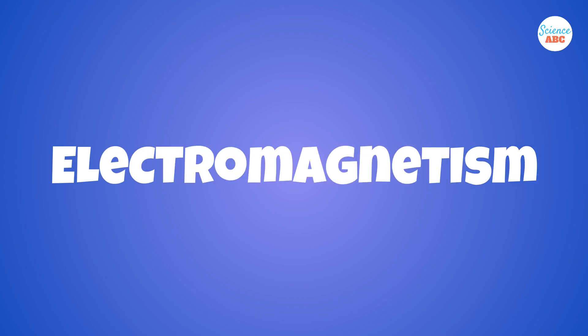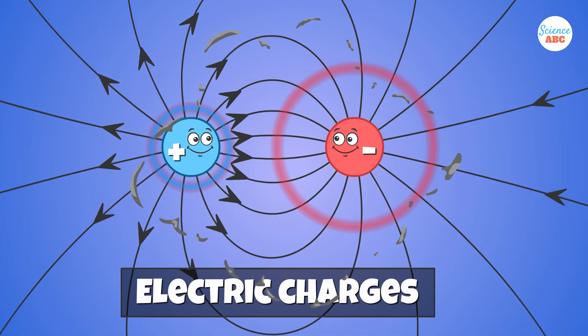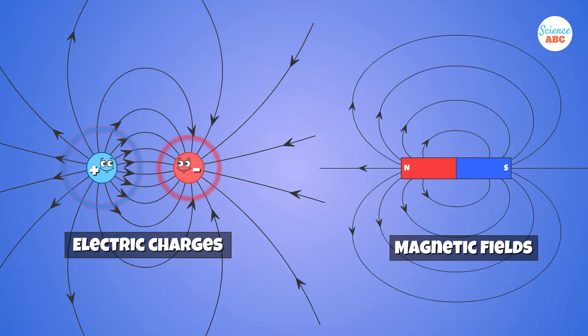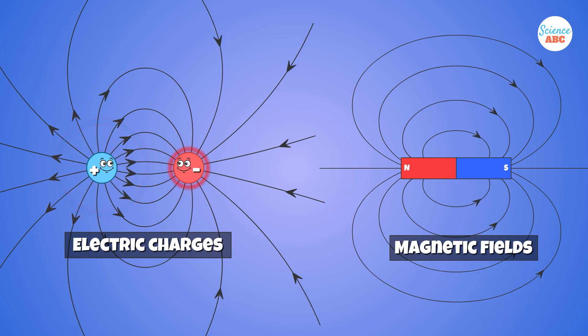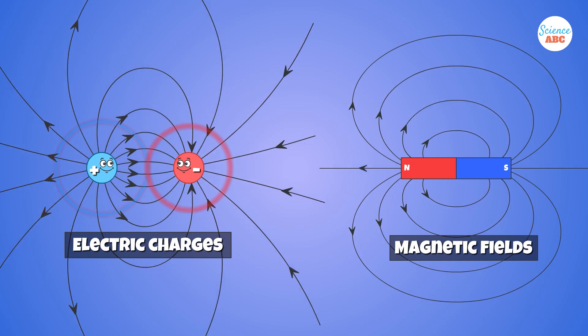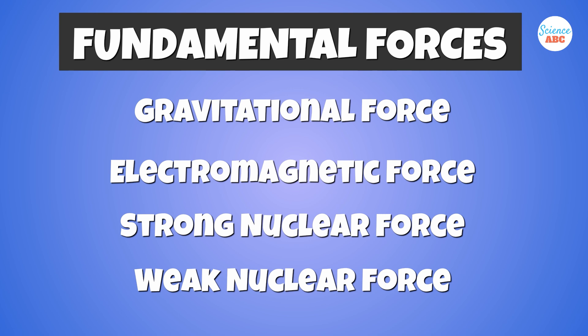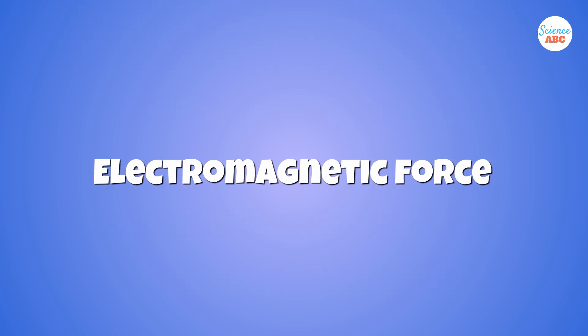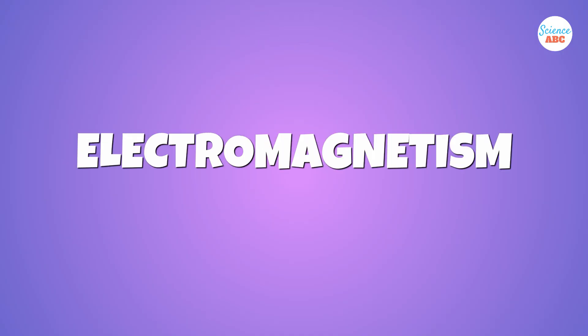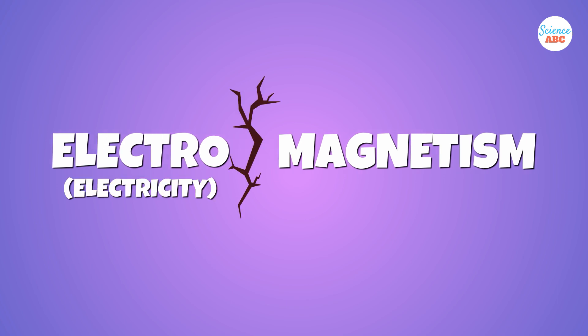Electromagnetism refers to the interaction between electric charges and magnetic fields and the forces associated with them. This fundamental force of physics is one of the four fundamental interactions of nature and governs much of the world around us. The word electromagnetism is formed from two other words: electricity and magnetism.